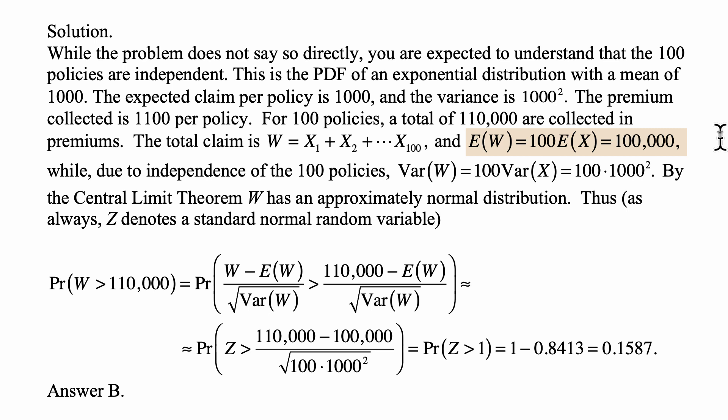So we can conclude that the probability that W is more than 110,000, the premium collected, is the probability that (W - E(W))/√Var(W) is greater than (110,000 - E(W))/√Var(W).